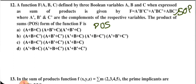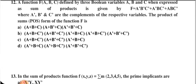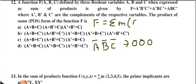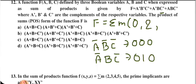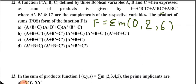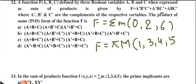Finding the available minterms: A̅B̅C̅ = 000 = m0; A̅BC̅ = 010 = m2; ABC̅ = 110 = m6. So F = Σm(0,2,6). Missing terms are 1, 3, 4, 5, and 7. For POS, max terms: M1 = A+B+C̅; M3 = A+B̅+C̅; M4 = Ā+B+C; M5 = Ā+B+C̅; M7 = Ā+B̅+C̅.